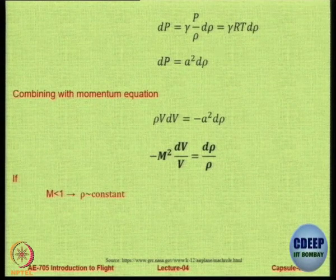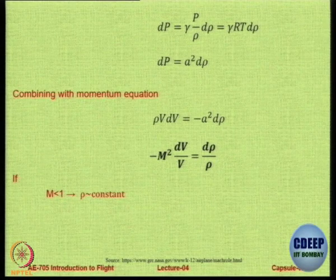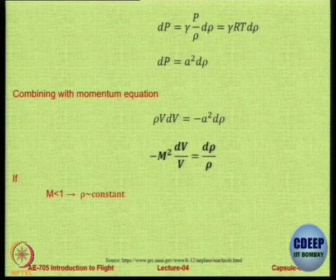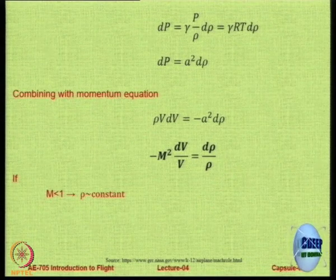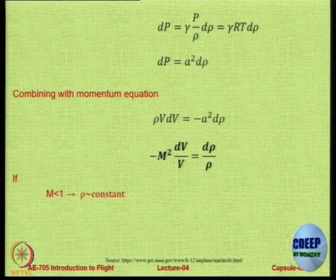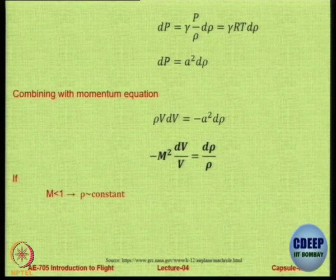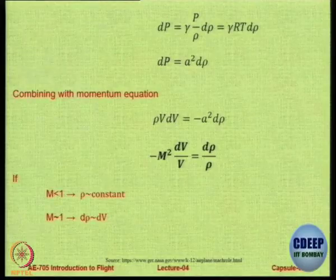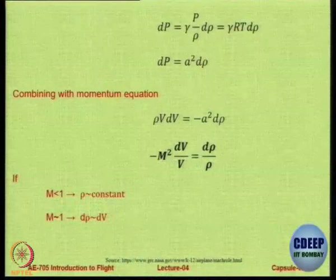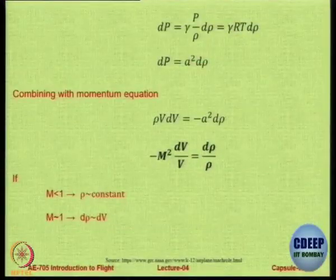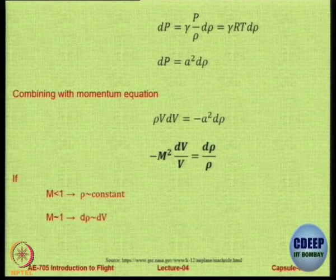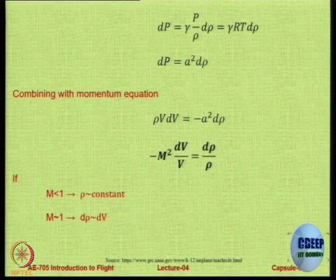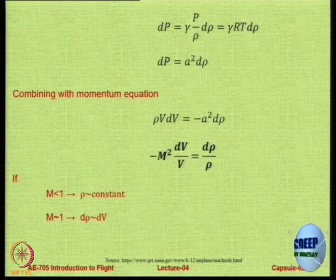If Mach number is 0, then change in density is 0. If Mach number equals 1, then dV/V equals dρ/ρ — change in velocity and change in density are related. If Mach number is less than 1, it is a very small number because it is squared. For example, if Mach number is 0.1, then 0.1² times dV/V can be neglected, meaning dρ/ρ is almost 0 — density is almost constant.